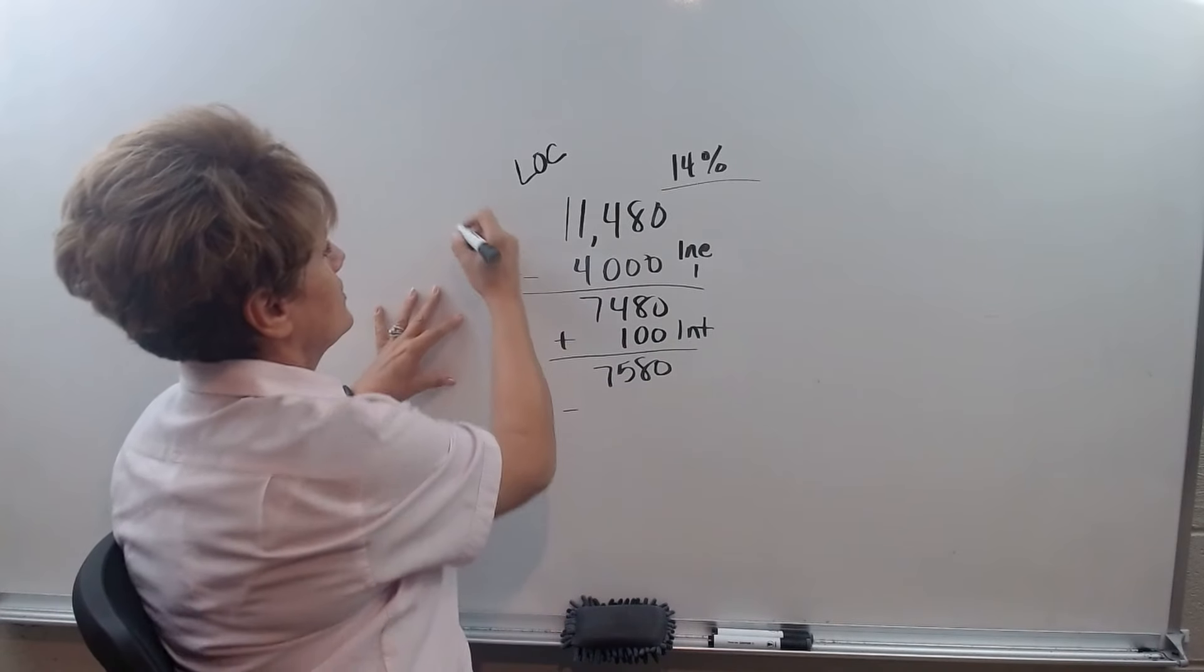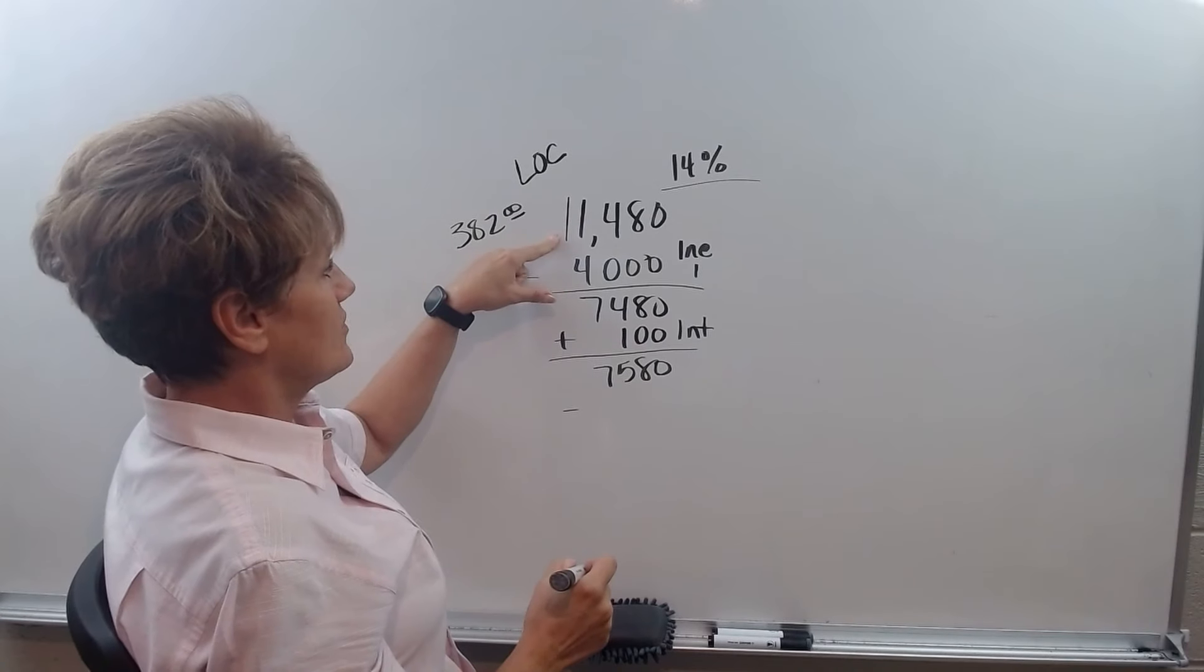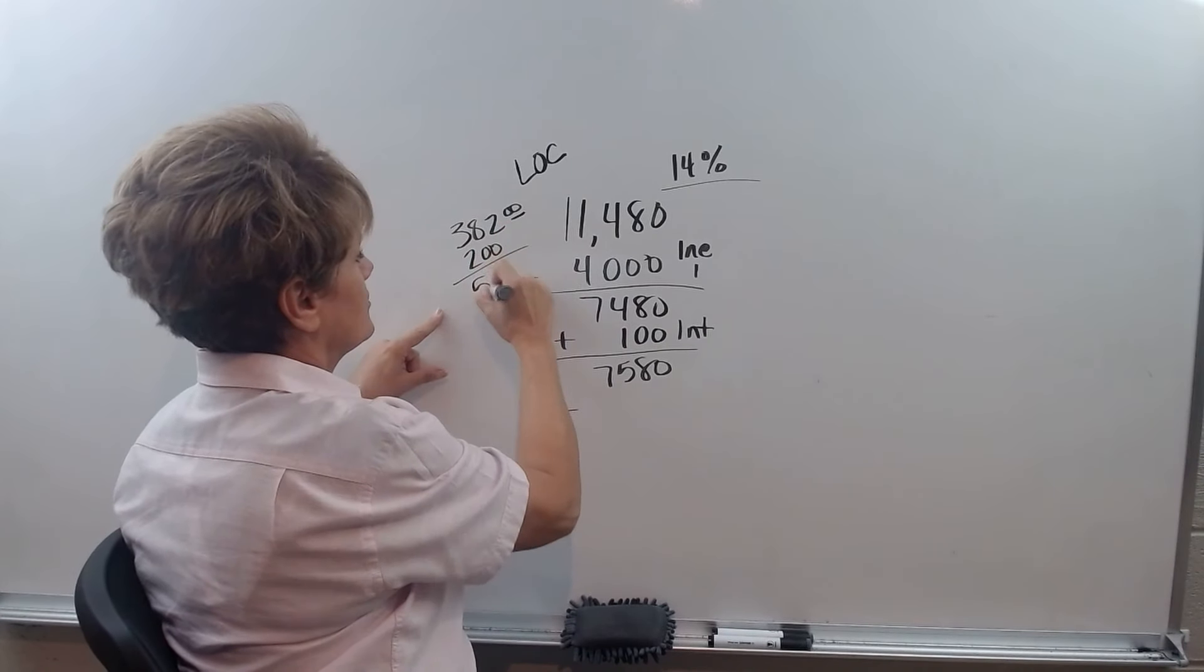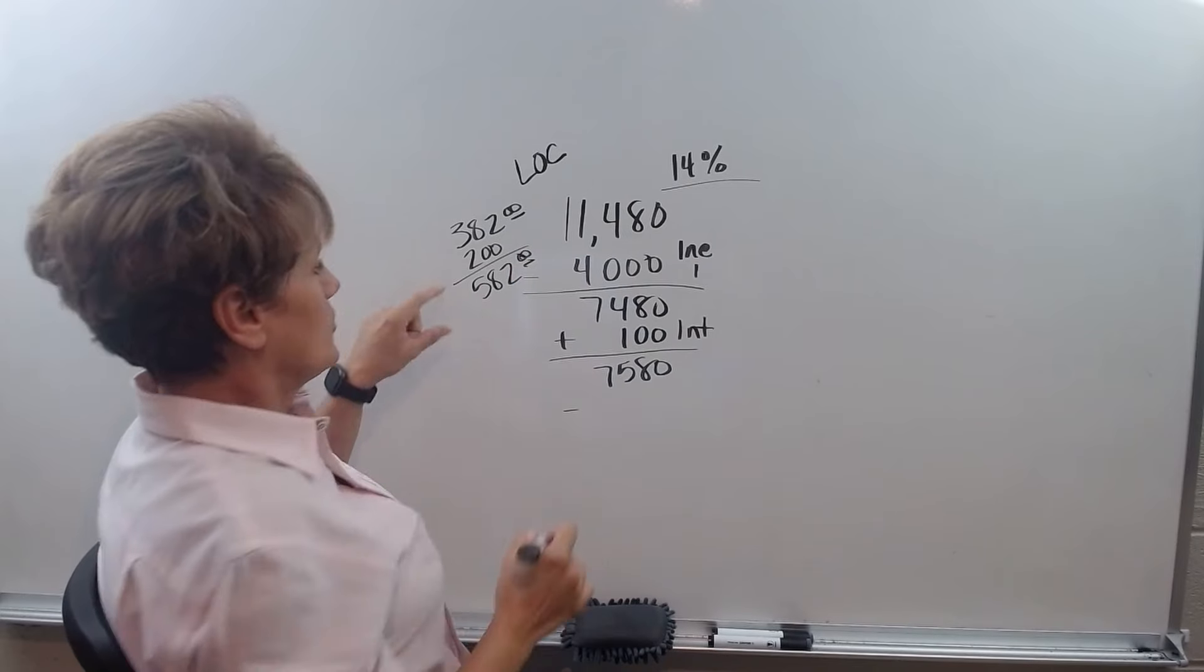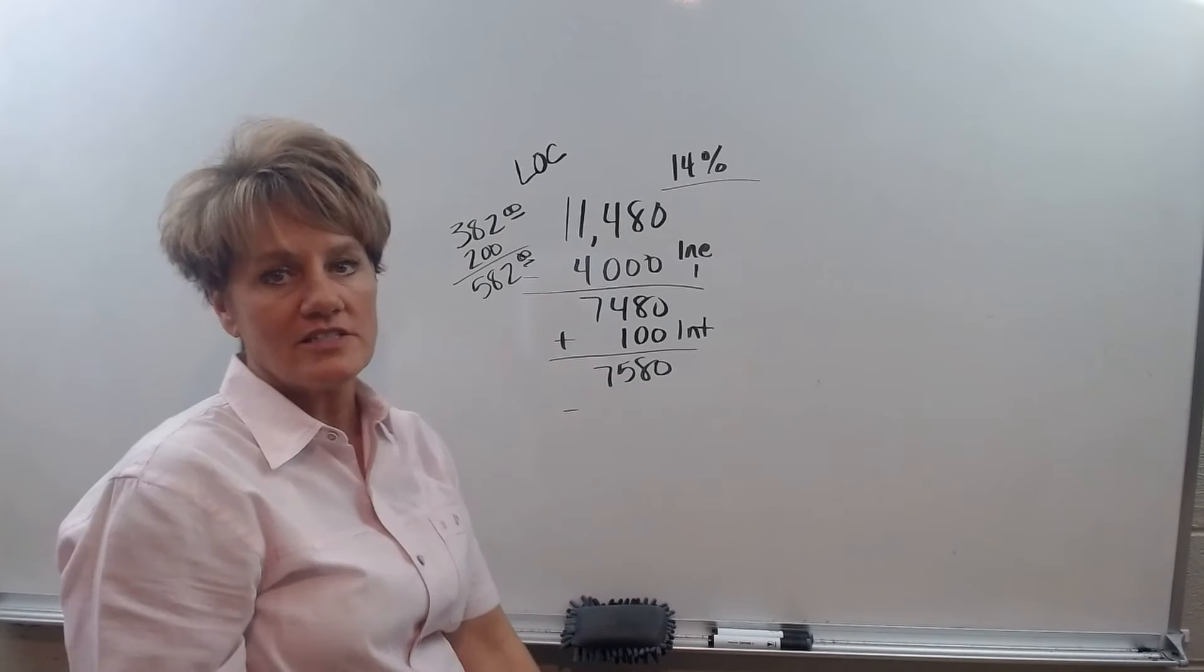Then the $382 that you had in credit card payments is now cash flow going into this, plus you had about $200 in cash flow already, so $582, let's say, for your cash flow is what's going to be working this down every month. Does that make sense? It does, yeah.